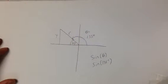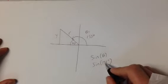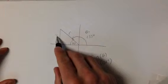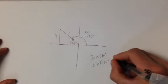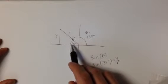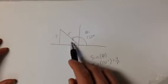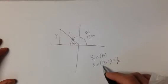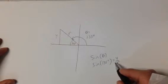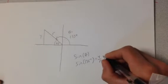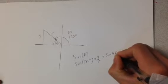What that tells you is that the sine of 135, which is y over r, is the same as the sine of 45 degrees. So we call 45 degrees the reference angle. So the sine of 135 degrees is equal to the sine of 45 degrees.